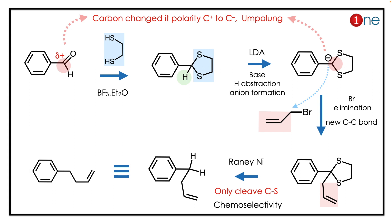So the final product is benzene with a side-chain alkene. The concept of the dithiolane here is Umpolung — it is basically the conversion of charges.